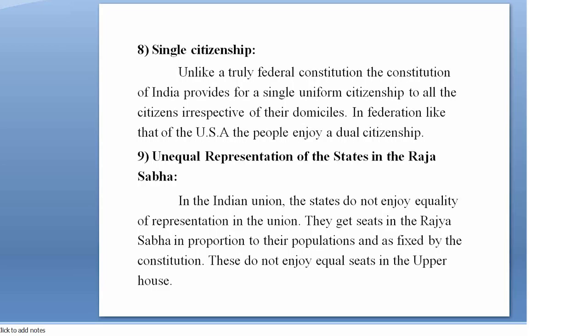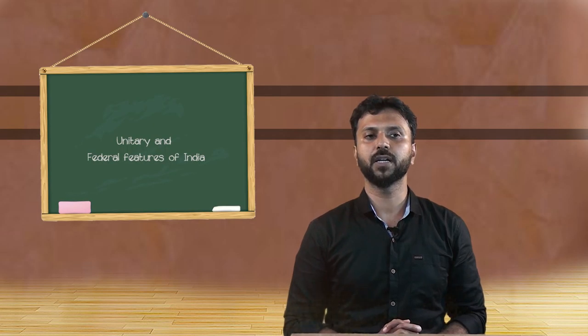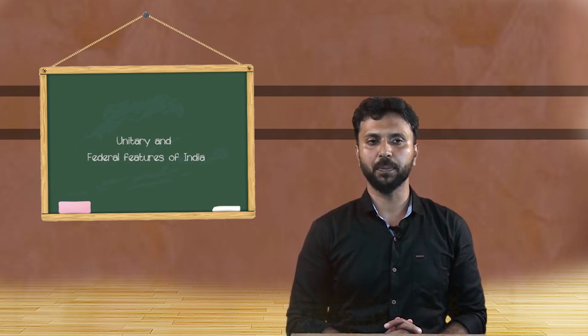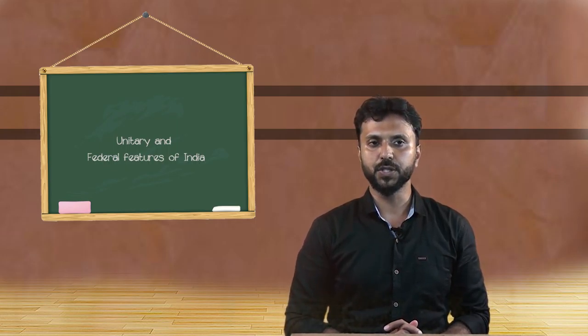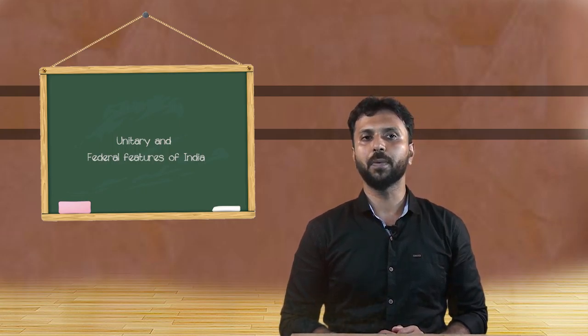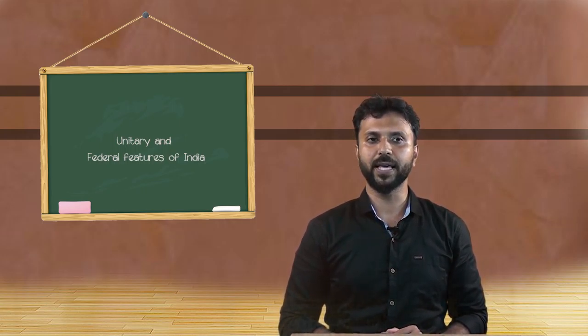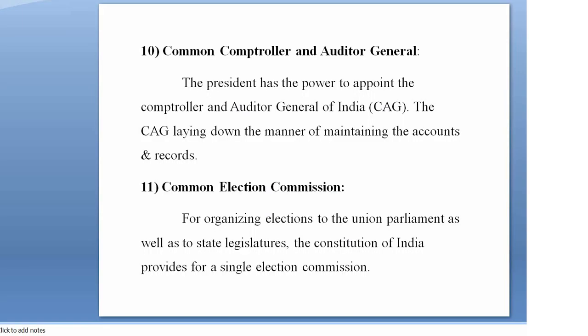Another unitary feature is the unequal representation of states in the Rajya Sabha. In the Indian union, states do not enjoy equality of representation; they get seats in the Rajya Sabha in proportion to their population as fixed by the constitution and do not enjoy equal seats in the upper house. There is also a common Controller and Auditor General — the president has the power to appoint the CAG and lay down the manner of maintaining accounts and records. Additionally, there is a common election commission for organizing elections for the union parliament as well as the state legislatures.